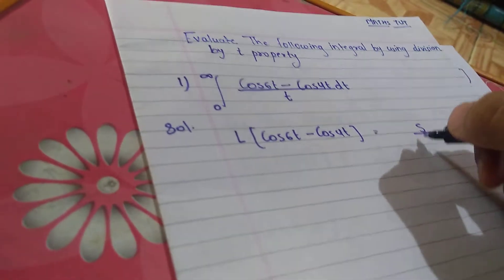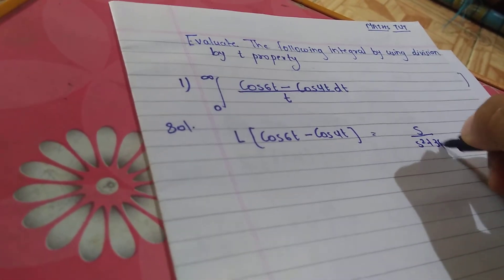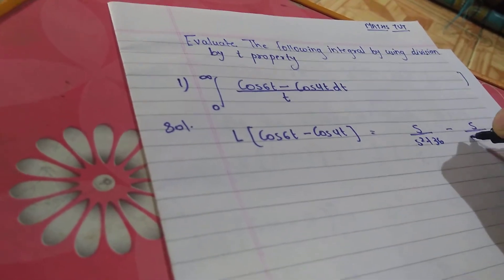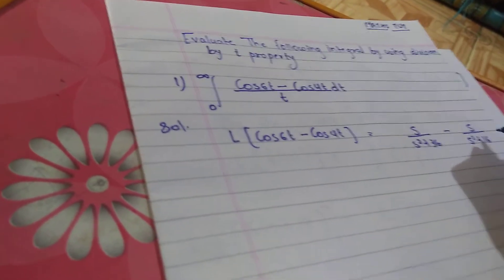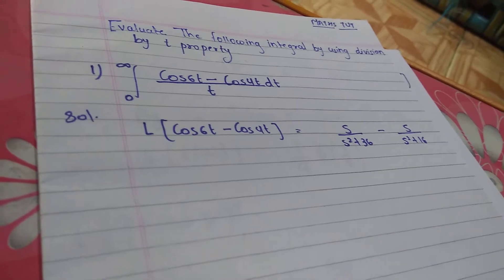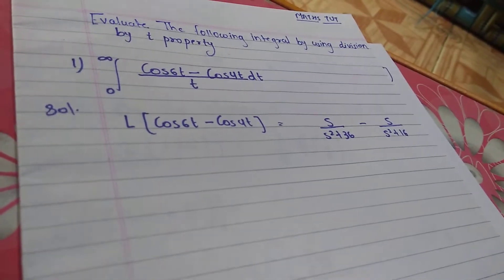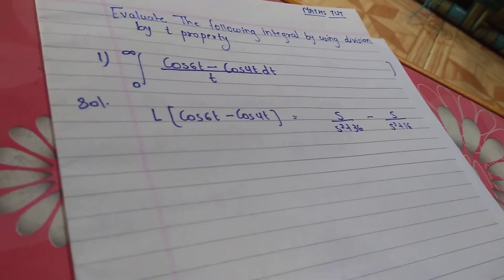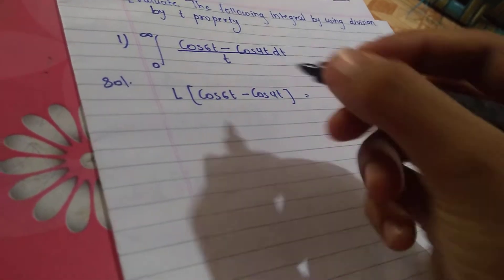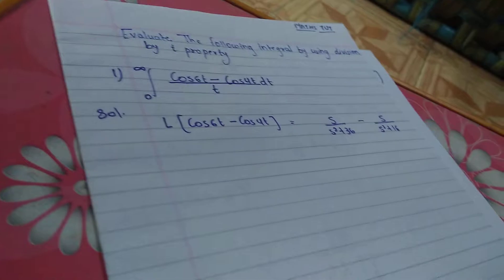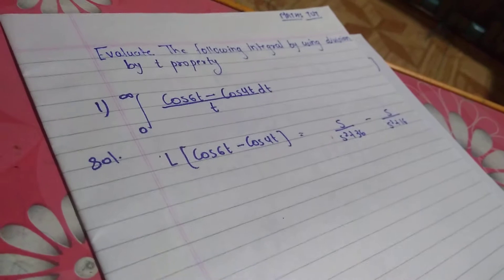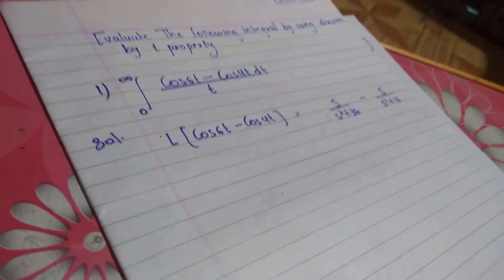The Laplace of cos(6t) minus cos(4t) is s upon s² plus 36, minus s upon s² plus 16. This is as per the Laplace formula for both terms. Now what we have to find out is the Laplace of cos(6t) minus cos(4t) upon t.